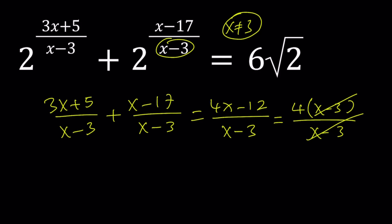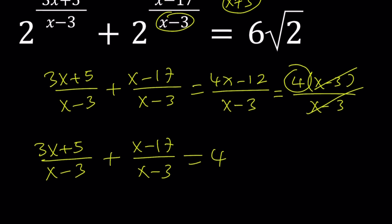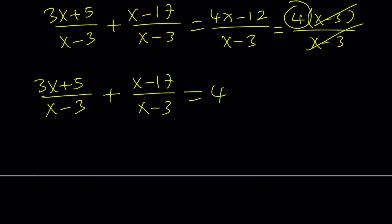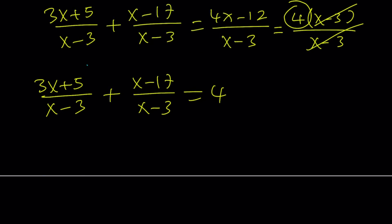Hopefully you got to see this too. Even if you didn't, don't worry — these things take practice and lots of patience. So let's go ahead and rewrite this. We have (3x+5)/(x-3) plus (x-17)/(x-3) equals 4. If you said substitution, you guessed it right — yes, I'm going to use substitution.